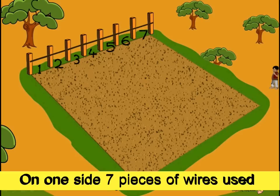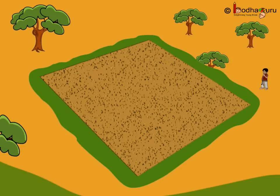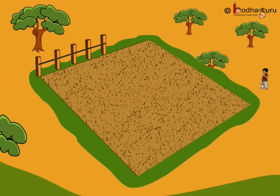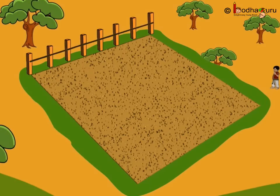So let us see how Mahanath Ram did the fencing of his farm. Starting from this side, he put 1, 2, 3, 4, 5, 6, 7 pieces of small wire.